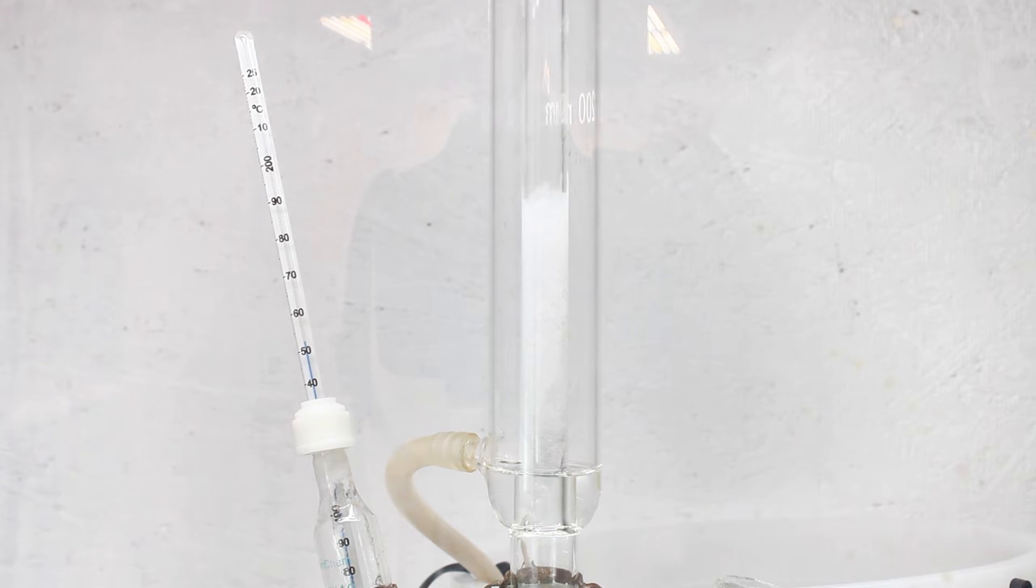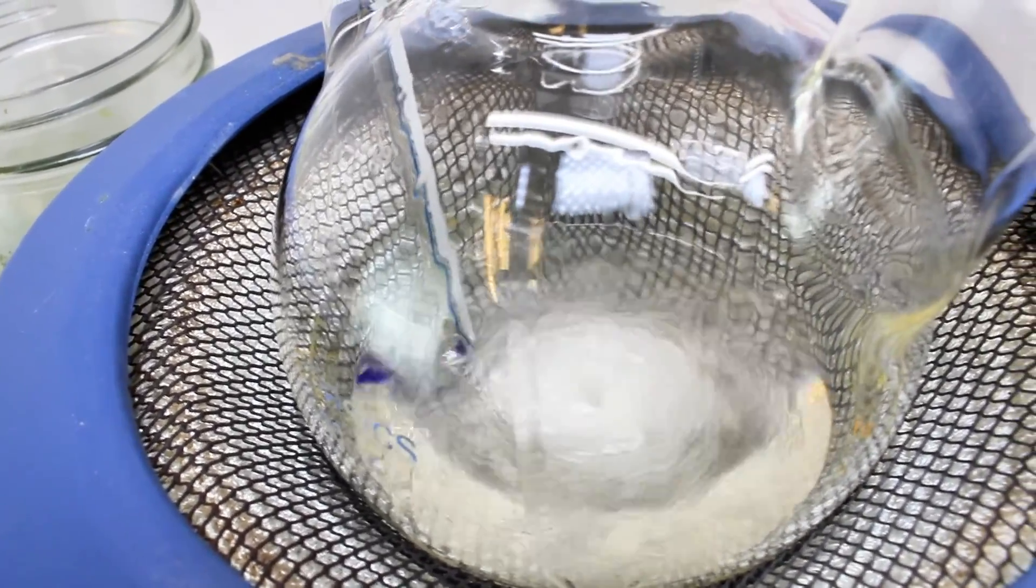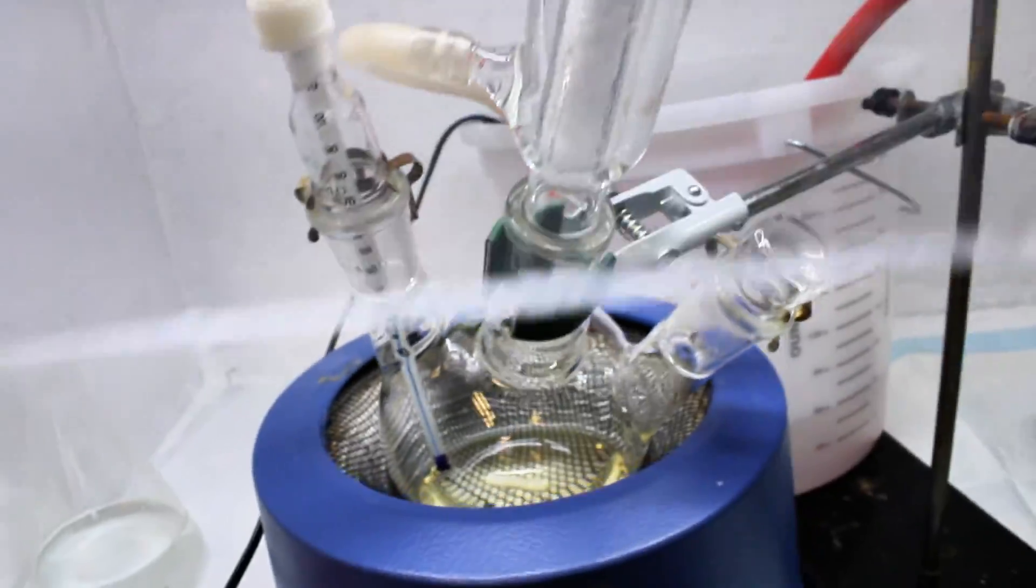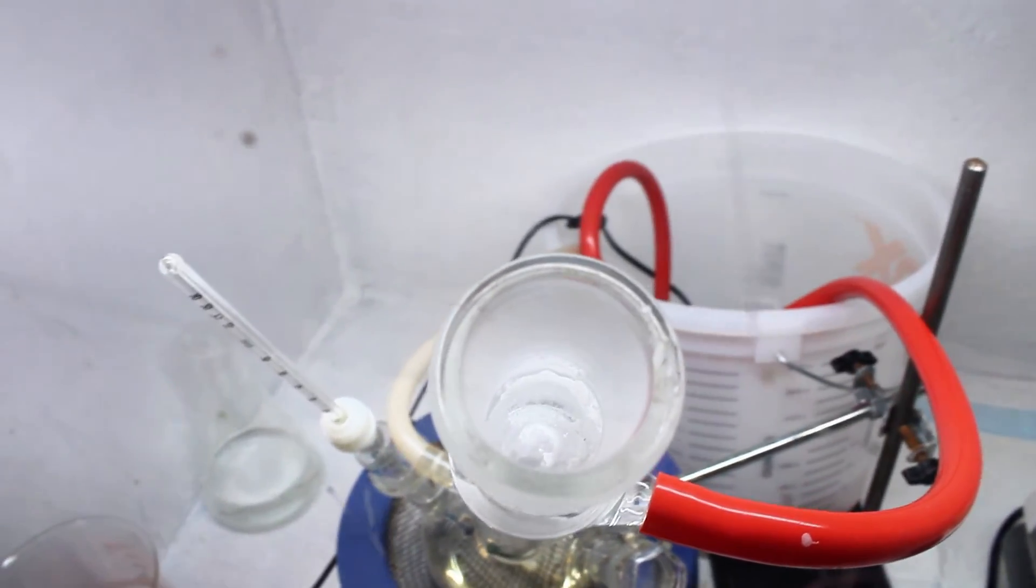As the reaction proceeded, the acetamide began to boil enough that it reached my condenser and began to crystallize. It never crystallized to the extent that it completely blocked my condenser, but it certainly could, and this would be something to watch out for. There were a few times I actually felt it might clog my condenser, so I used my glass stir rod to scrape it off the sides and push it back down.